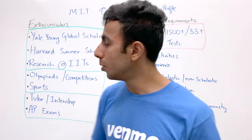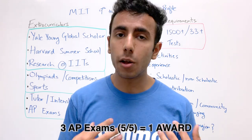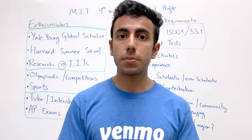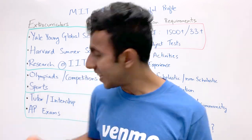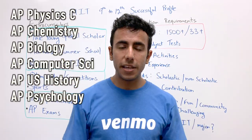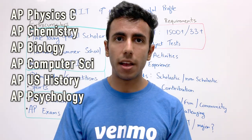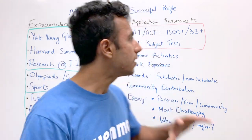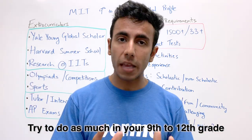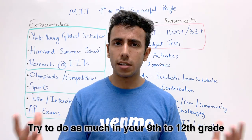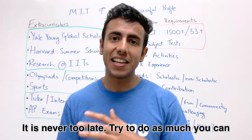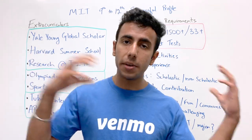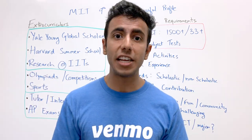I also want to talk about AP exams. I personally took four to five AP exams. If you score 5 out of 5 on three AP exams, that becomes a great award — you receive a distinction, which can go into the awards section. There are many AP exams available: AP Chemistry, AP Biology, AP Computer Science, AP World History, AP US History, and more. You can spread them across 9th to 12th grade based on your schedule — just plan it out.